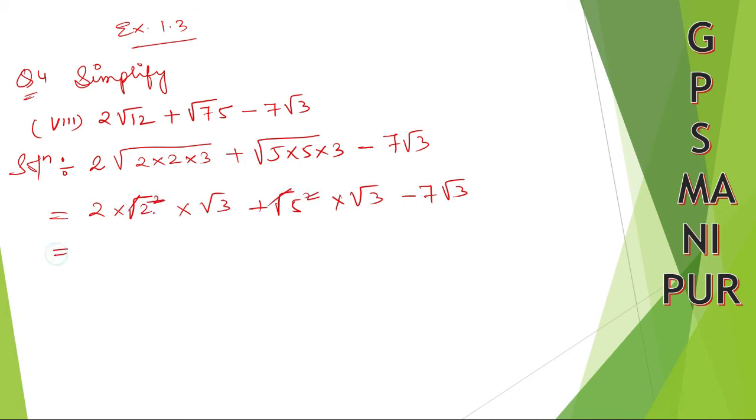So I got 2×2 = 4, 2 to the 4, right? 4√3 plus 5 cancel, so 5√3 minus 7√3. Let me do this 2 plus first: 5√3 + 4√3.